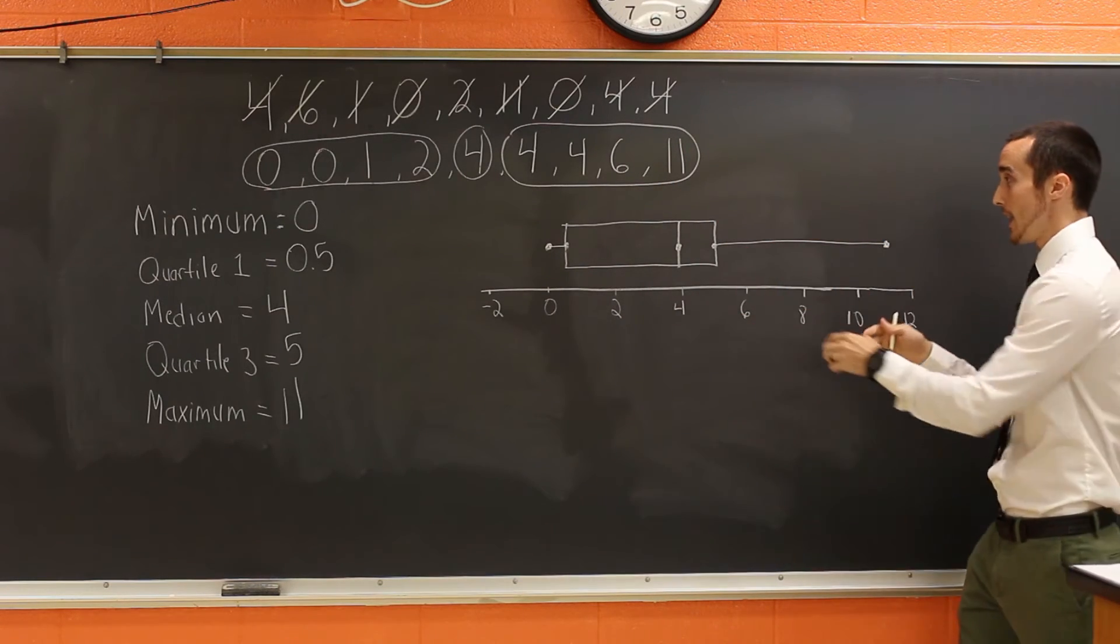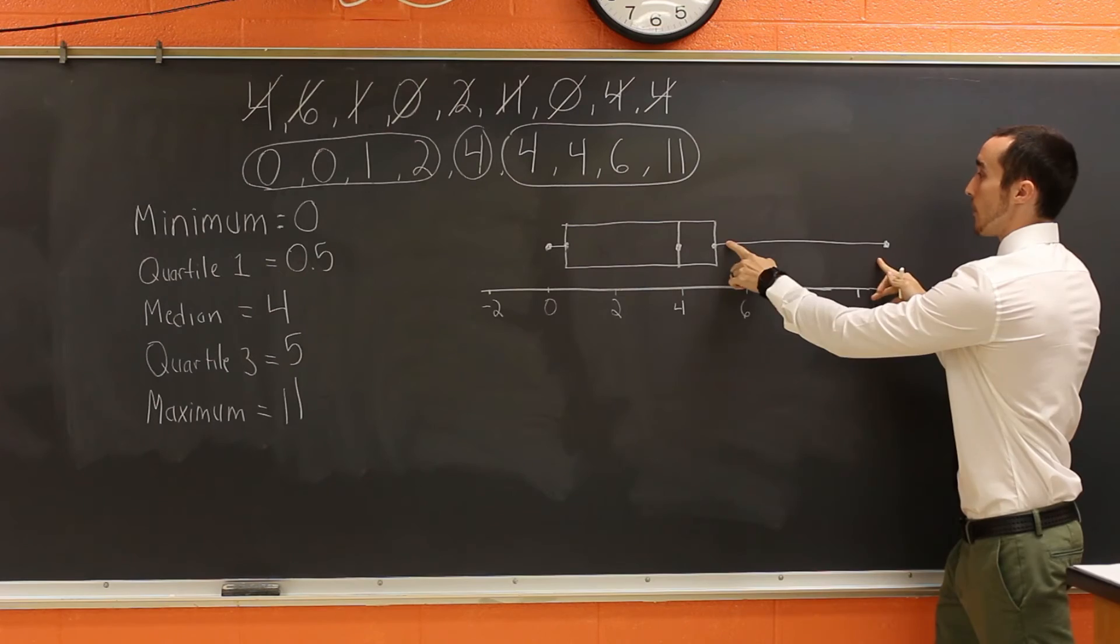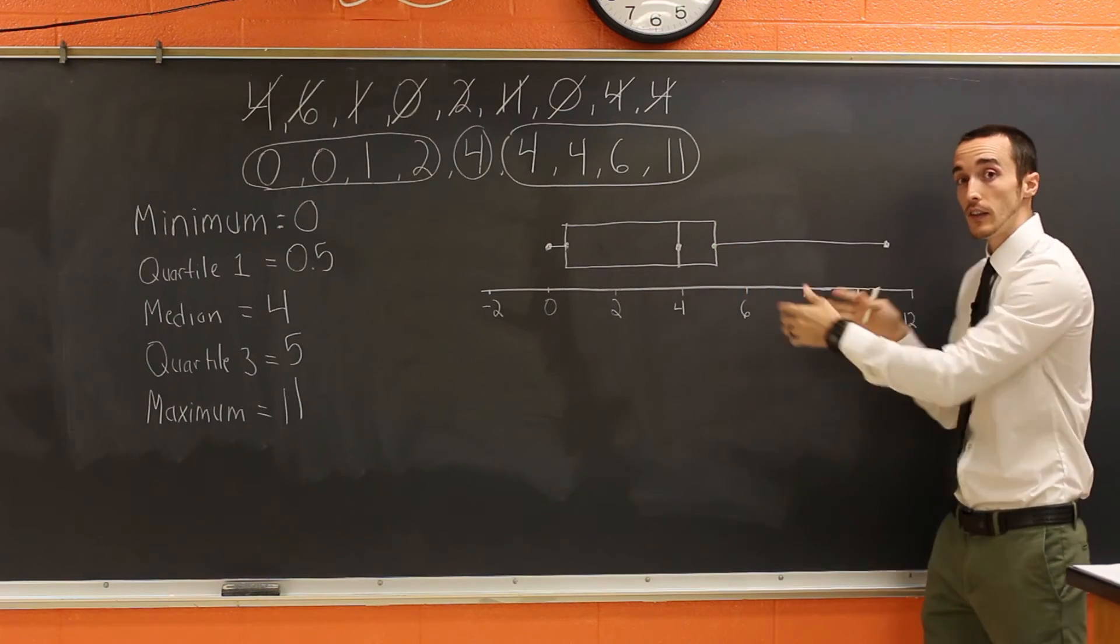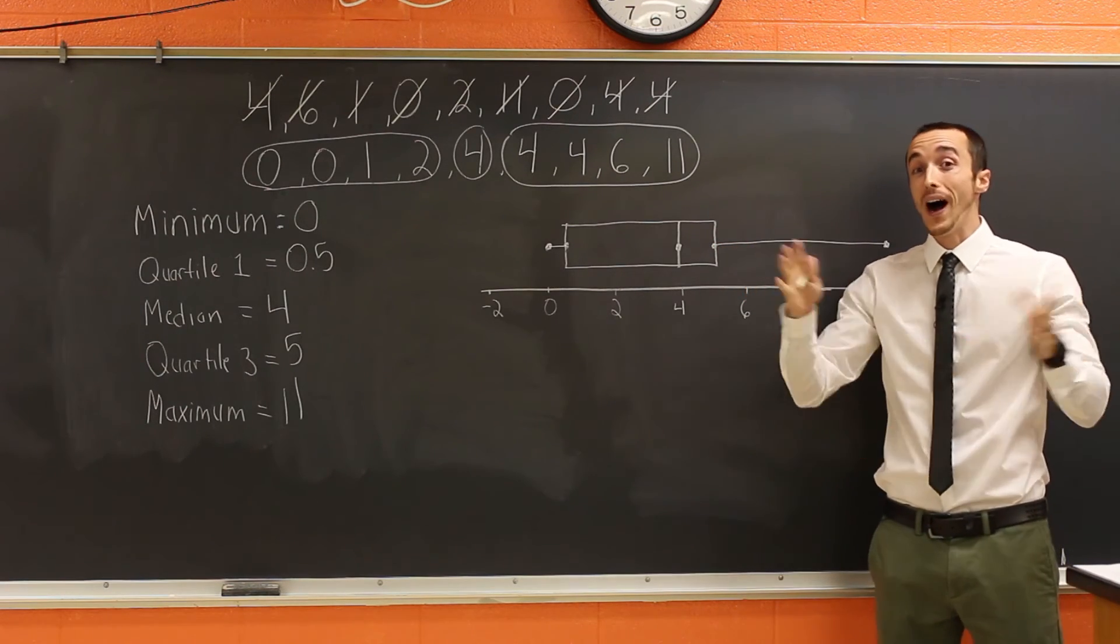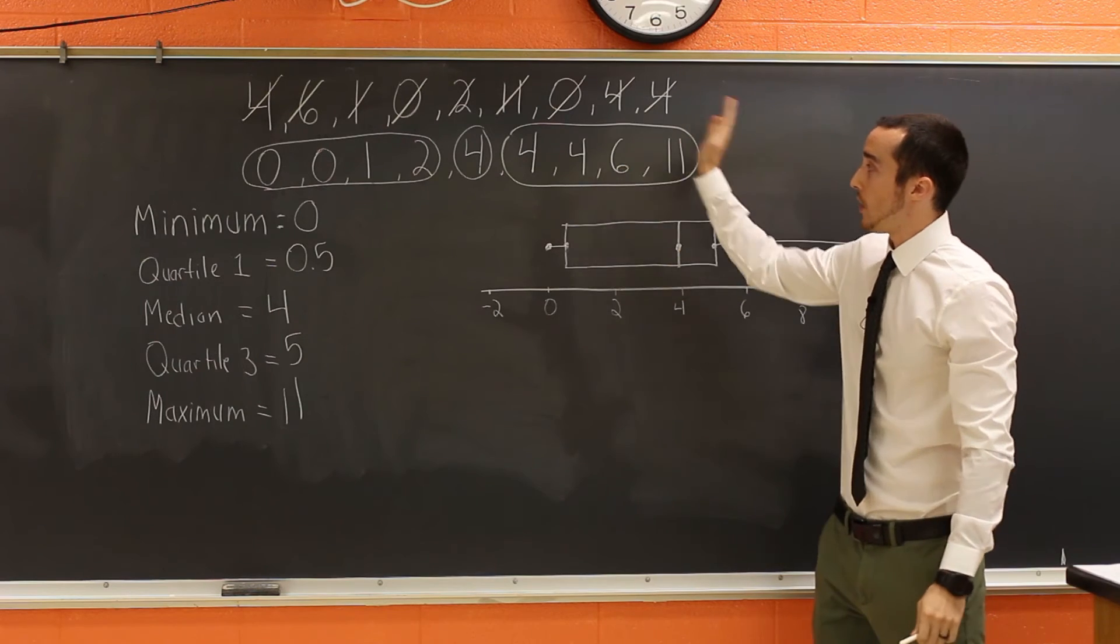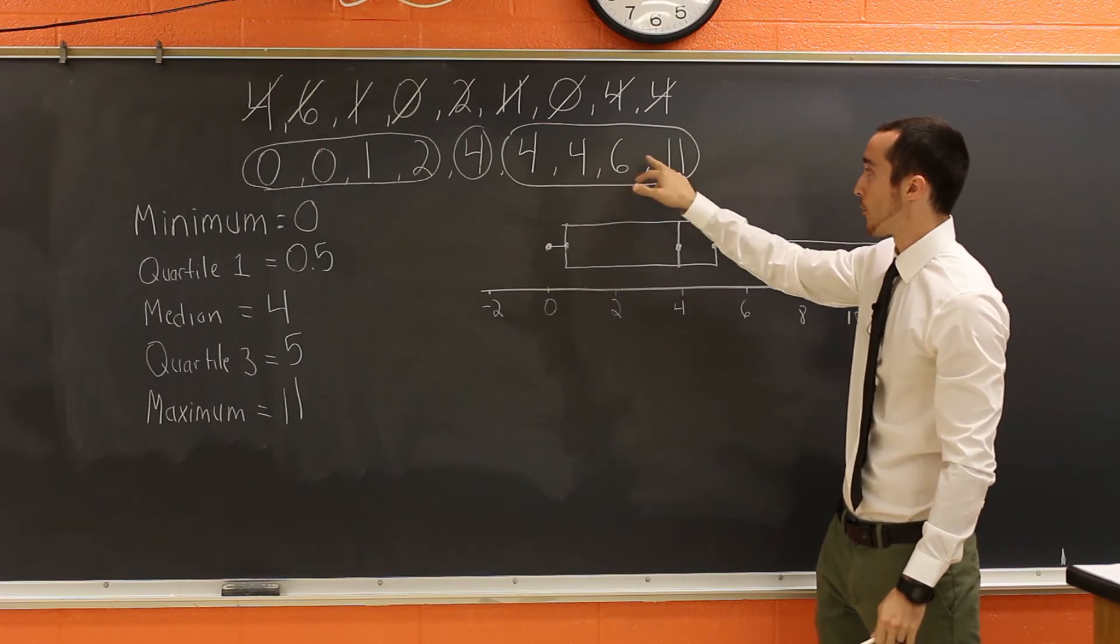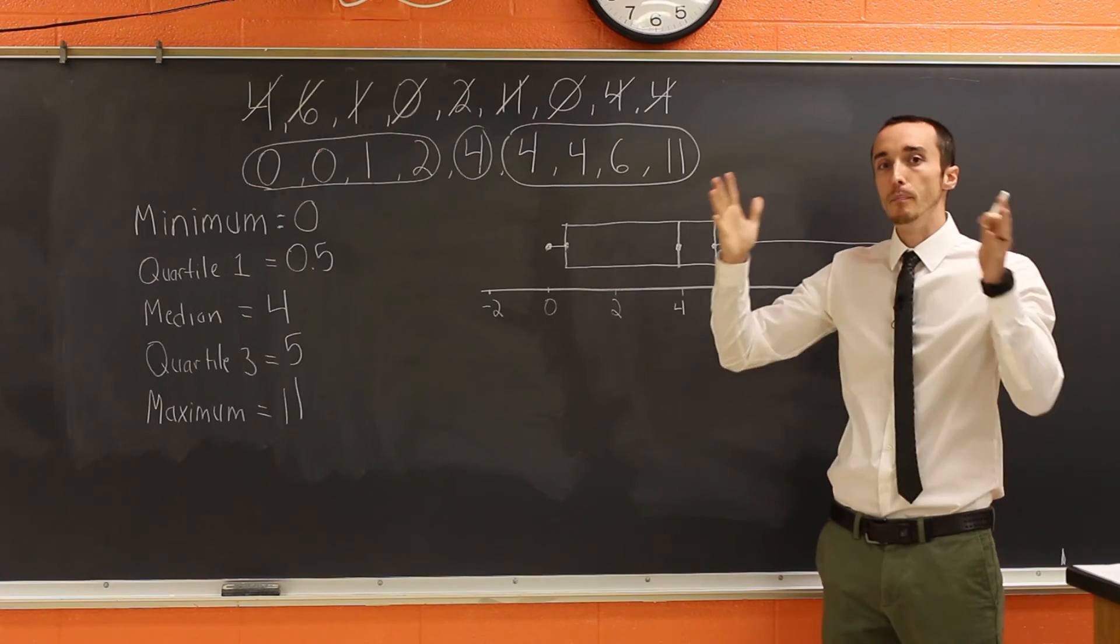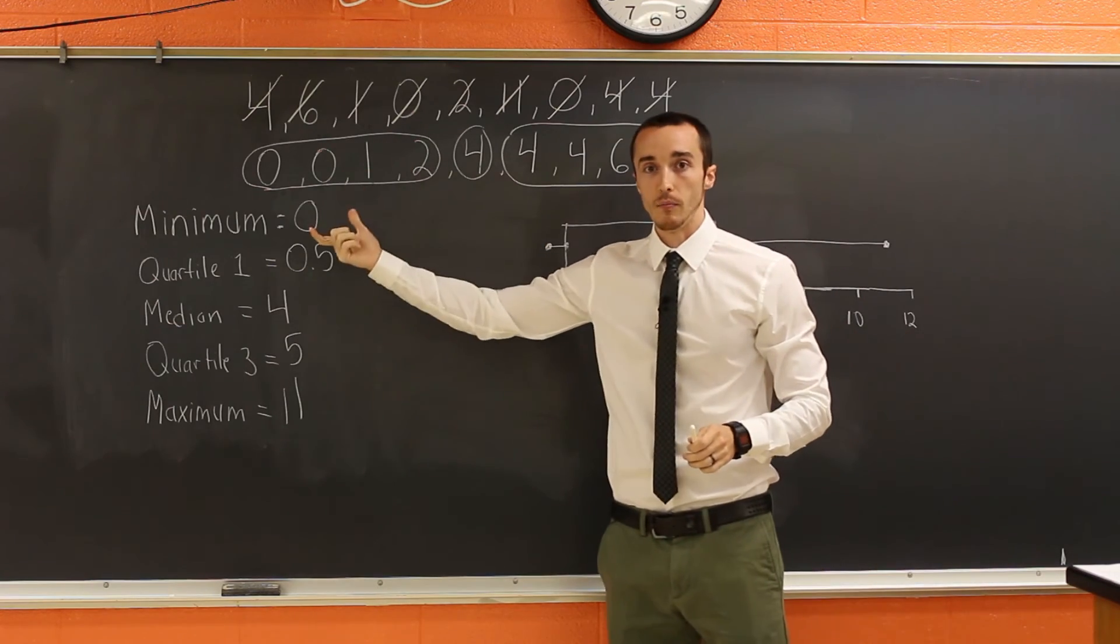Conversely, the opposite of that, if you look at the upper end of our data, see how spread out it is. So that shows you that we have kind of wildly different results up here on the upper end. So you can see, you know, going from four to six to 11, there's a bigger jump than there is at the bottom.